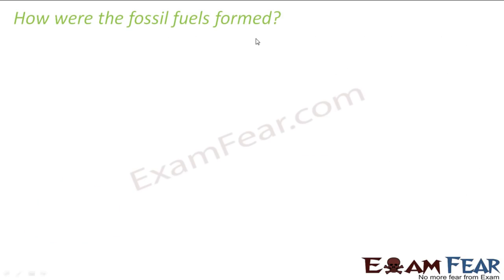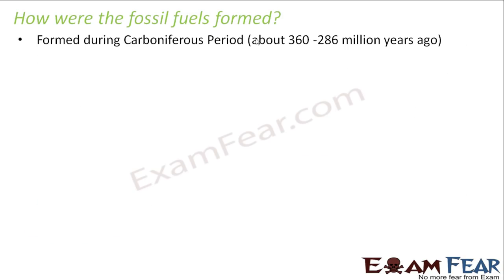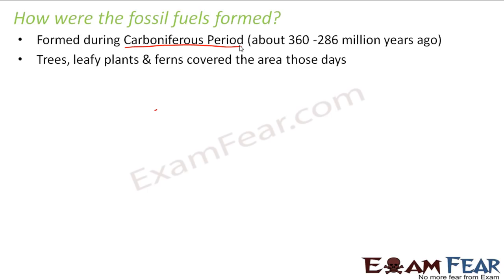These fossil fuels were formed during the carboniferous period, which was several million years ago — around the time of the dinosaurs. During the carboniferous period, most areas were covered by trees, leafy plants, ferns, and swamps, and the oceans were covered with green plant-like structures such as algae.